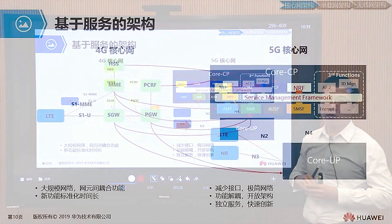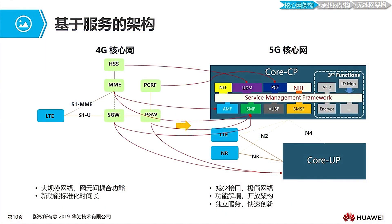This is the service-based architecture. In the future, we can stack third-party applications on demand in the core network functions. For example, ISP internet companies can develop new applications that are integrated into the network, making the network increasingly open. IT and CT are gradually merging, with good IT ideas and applications integrated into our network.